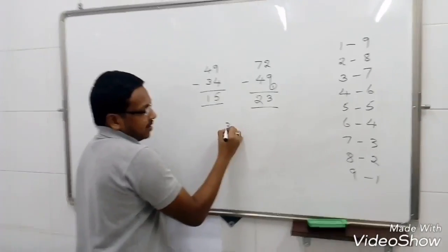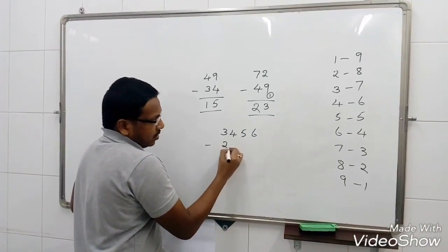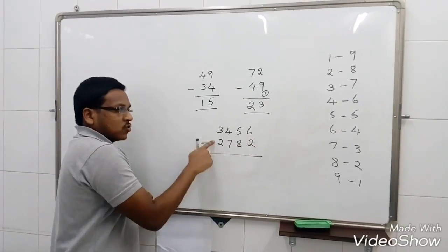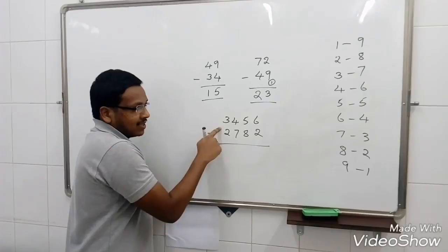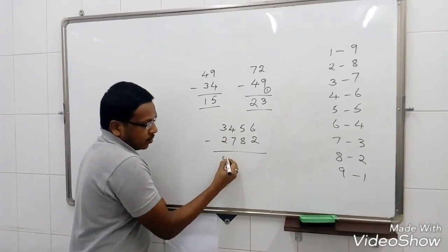We will see one more example then you will understand clearly. 3456 minus 2782. 3 minus 2, 1 I can write. Before that, I will check the next column. 4 and 7 we cannot subtract directly. It is a mismatch. So, 3 minus 2 is 1. That becomes 0.